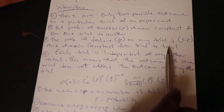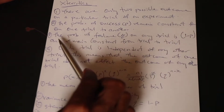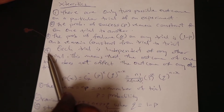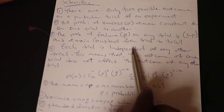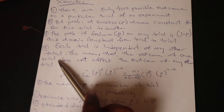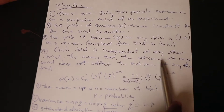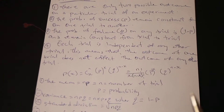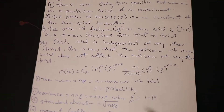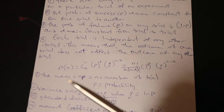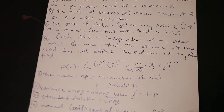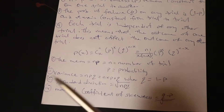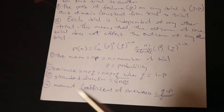Q remains constant from one trial to another. The fourth characteristic says each trial is independent of any other trials. This means that the outcome of any trial does not affect the outcome of any other trial — they are all independent of each other.